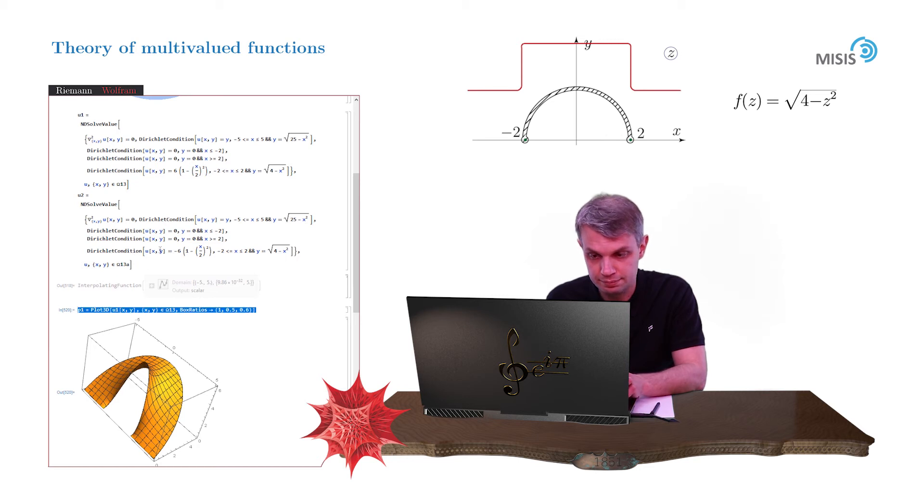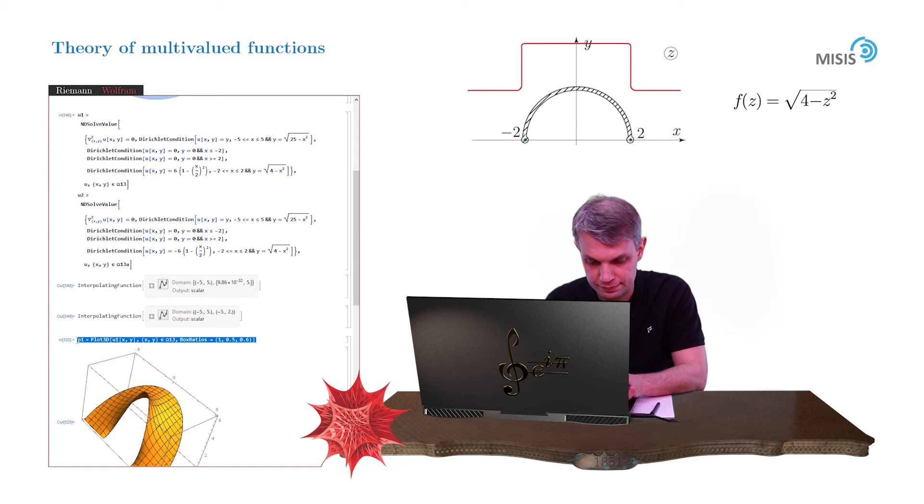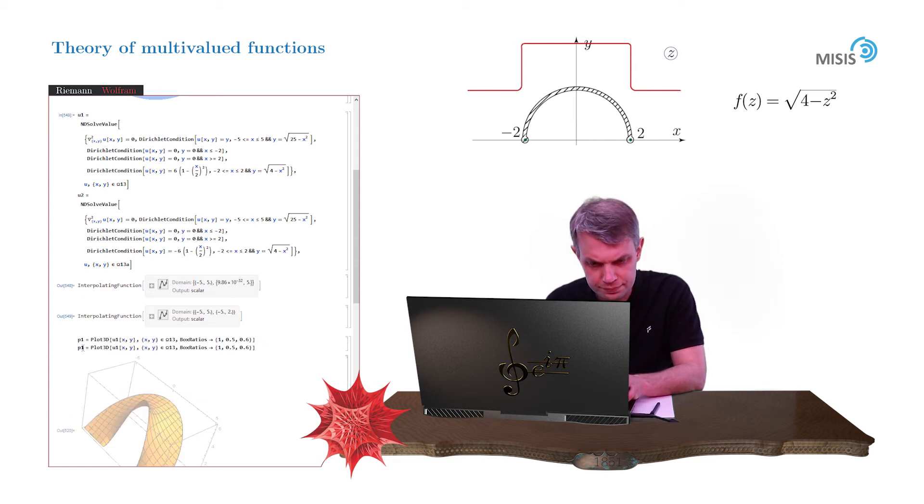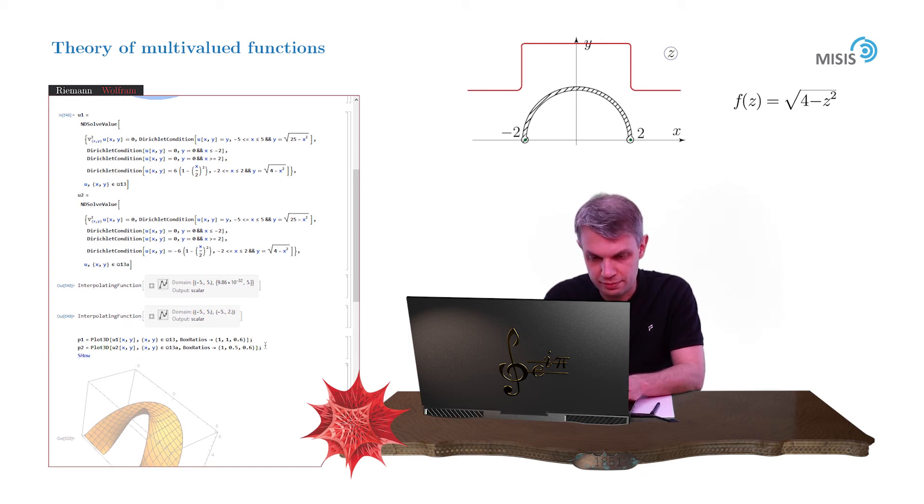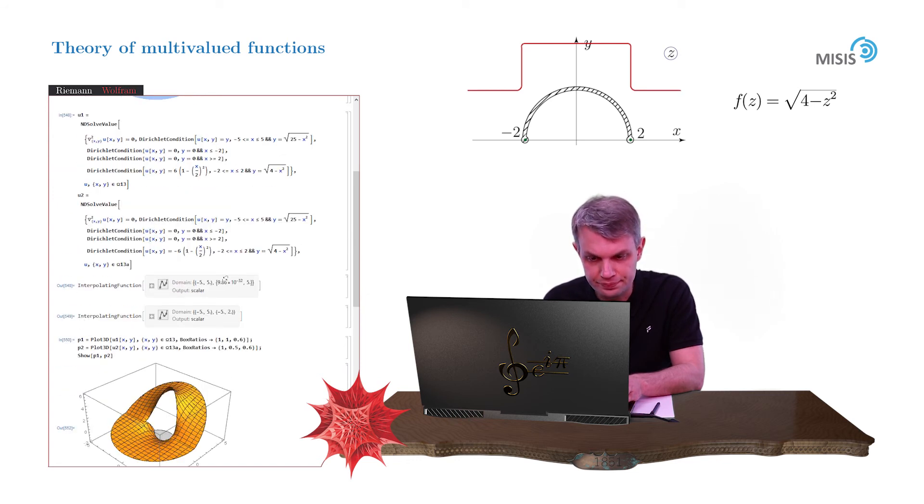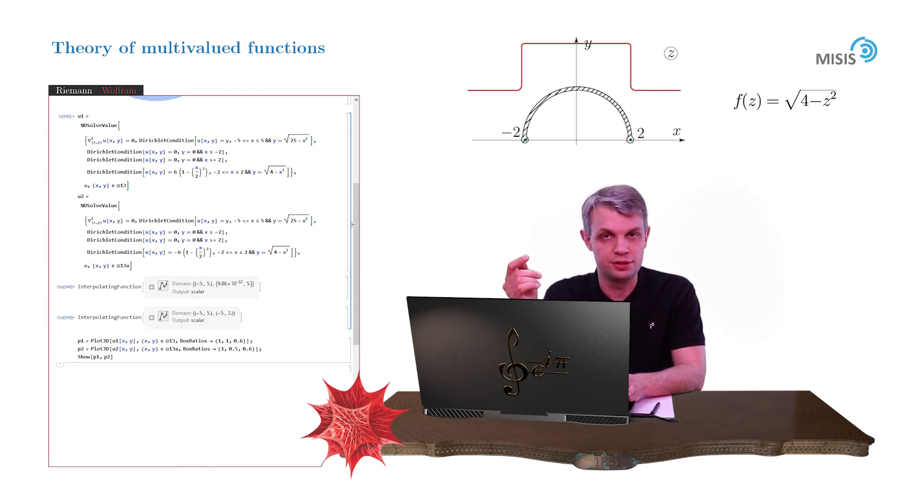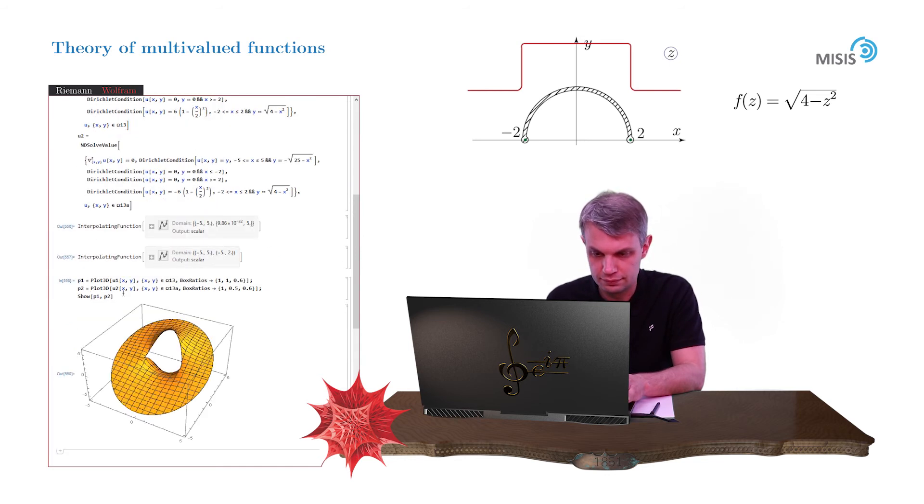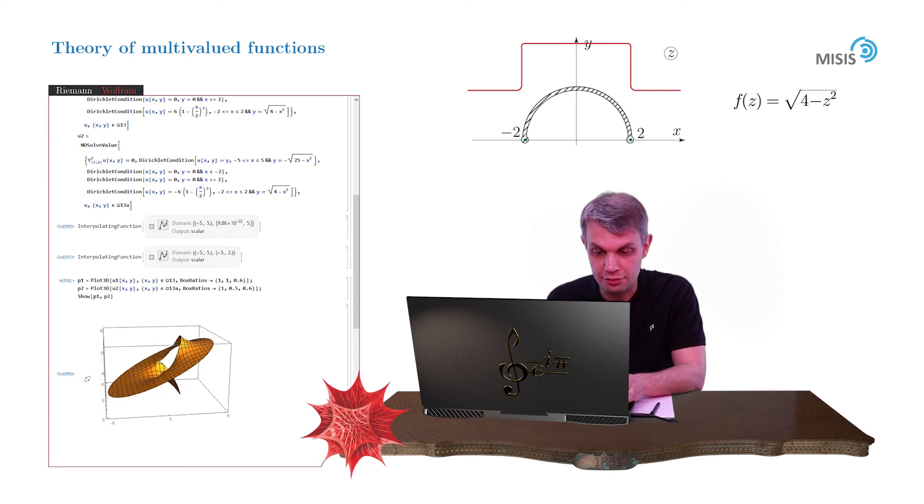And let us plot it. And let me draw it for you in the same coordinate frame. Oops, sorry, something went wrong. Let's see. Sorry, I forgot to change the domain of y when I set the boundary condition for the lower arc. Of course, it's minus square root of 25 minus x squared because it's lower semicircle. Okay, let's try again. And here it is. Our first Riemann sheet is ready.